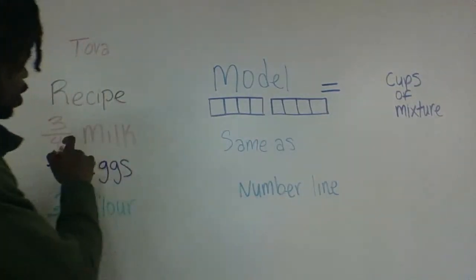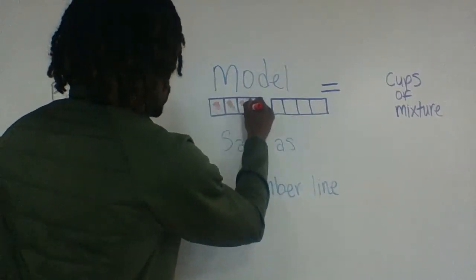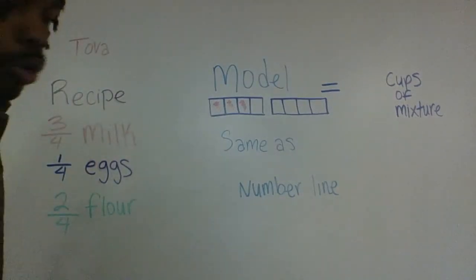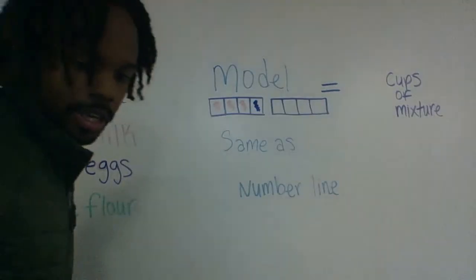So we see here we have three fourths milk, one, two, three quarters milk, and we have one quarter egg that she adds. Then she mixes in her flour. We have two fourths.